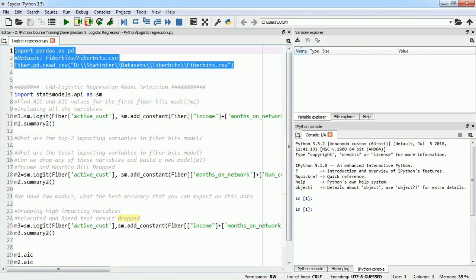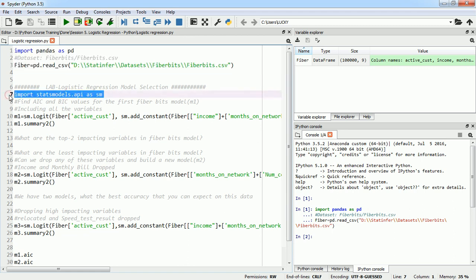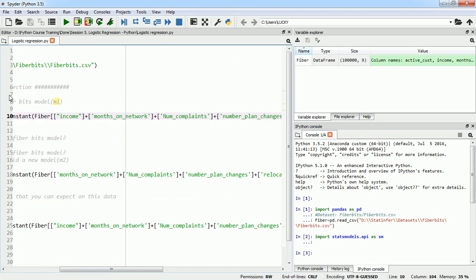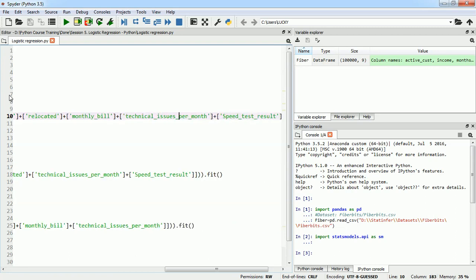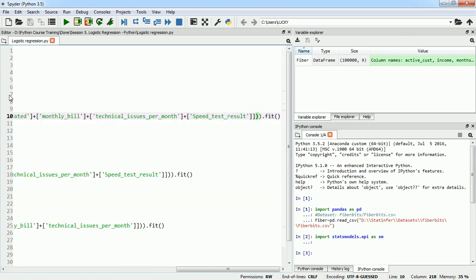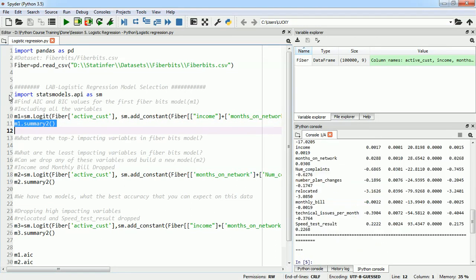I will import my dataset and then import the statsmodels API as SM, which I am going to use to build my model. Then I will define my model number 1 with SM.Logit, and I will take my Y as active customer, and in my X variable, I'm taking all the variables: income, months on network, number of complaints, number of plan changes, relocated yes or no, monthly bill, technical issues per month, speed test results, and everything. In a single line, I will add the constant and fit the model also. Now that I have built the model, I will look at the summary of this model and see which of the variables are important.